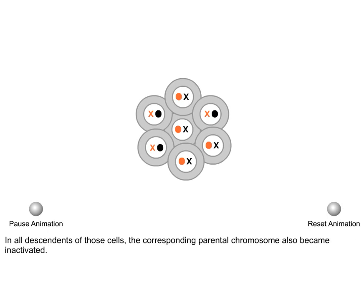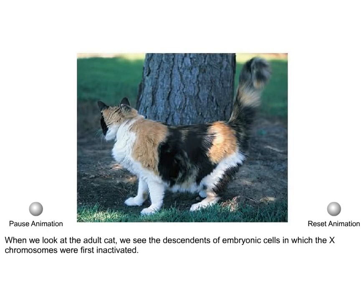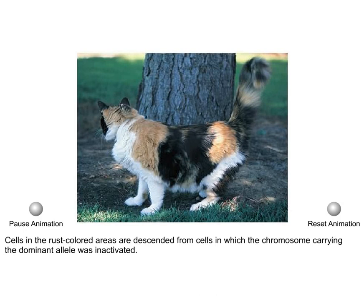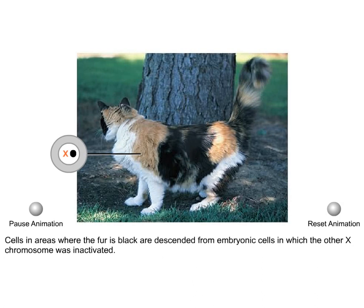In all descendants of those cells, the corresponding parental chromosome also became inactivated. When we look at the adult cat, we see the descendants of embryonic cells in which the X chromosomes were first inactivated. Cells in the rust-colored areas are descended from cells in which the chromosome carrying the dominant allele was inactivated. Cells in areas where the fur is black are descended from embryonic cells in which the other X chromosome was inactivated.